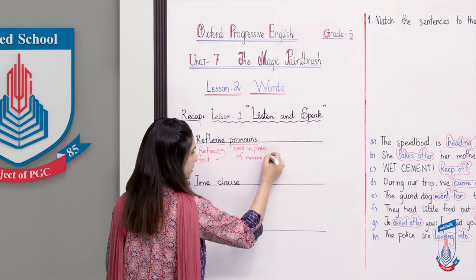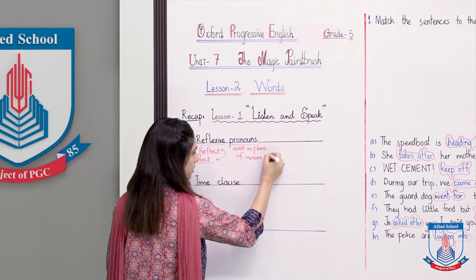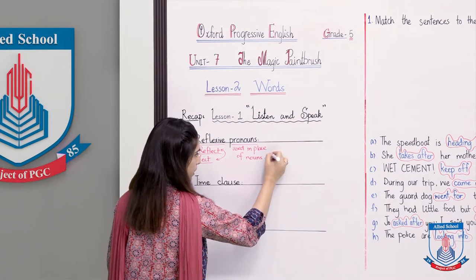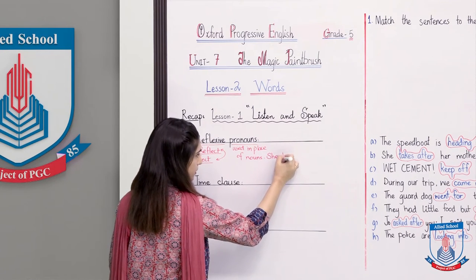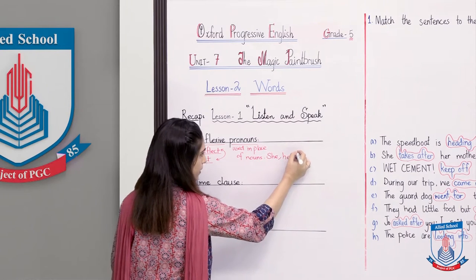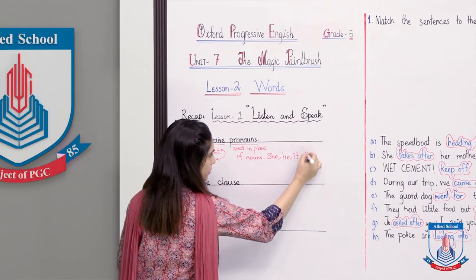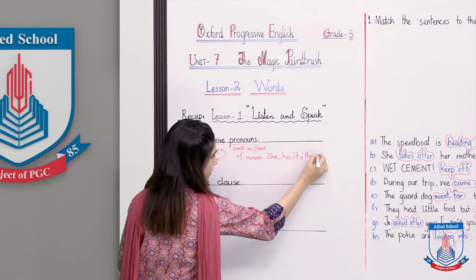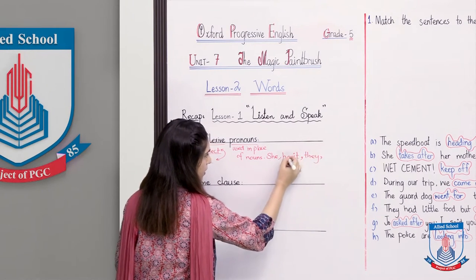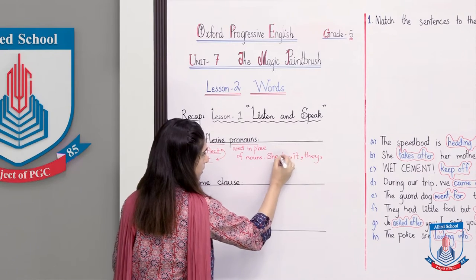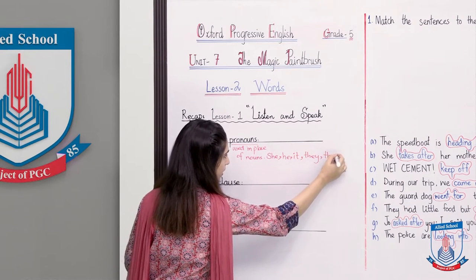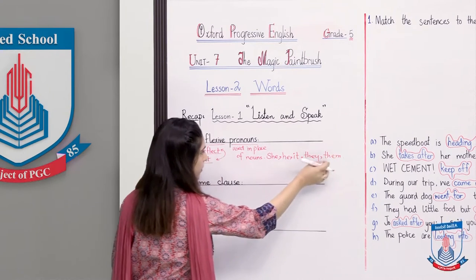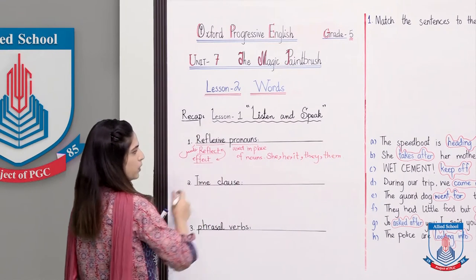Which pronouns will we write? She — very good. It — well done. What was the last one? Them — very nice. So these are five basic pronouns that we will use as reflexive pronouns.